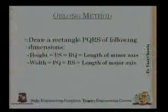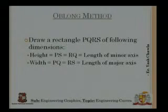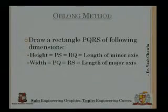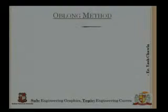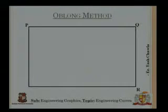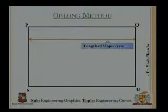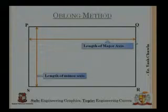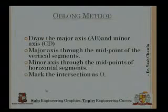Let us start. I am going to draw a rectangle PQRS with the following dimensions: the height PS or RQ will be the length of the minor axis, and the width PQ and RS will be the length of the major axis. So I have this rectangle PQRS where PQ and RS is the length of the major axis and PS and QR is the length of the minor axis.